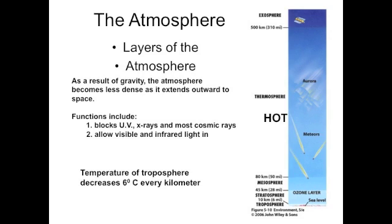The troposphere is the first layer of the atmosphere and it extends from 0 to 12 kilometers up. Its temperature decreases with altitude, so the further up you get, the colder it's going to be.